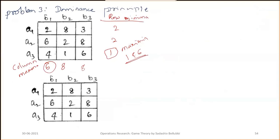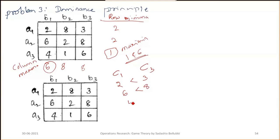Step 1 is column-wise comparison. Compare column 1 and column 3 — strategies B1 and B3. Column 1 elements are 2, 6, and 4, which are all less than 3, 8, and 6 respectively. So column 3 is dominating.